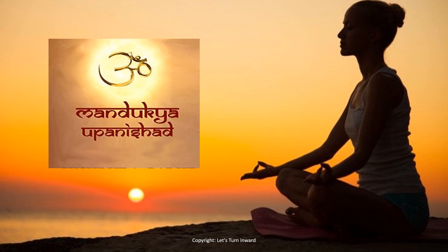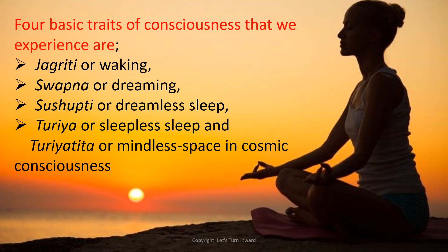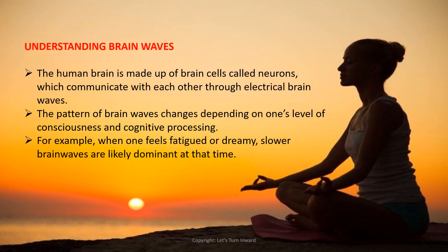There are four basic states of consciousness. The first is Jagriti, which means the wakeful state. The second is Swapna, which is the dreaming state. The third is Susupti, known as dreamless sleep or deep sleep. Most importantly, the fourth state is Turiya, also known as sleepless sleep or mindless space. Scientists have also developed ways to understand and measure waves in the human brain through neuronal activity.